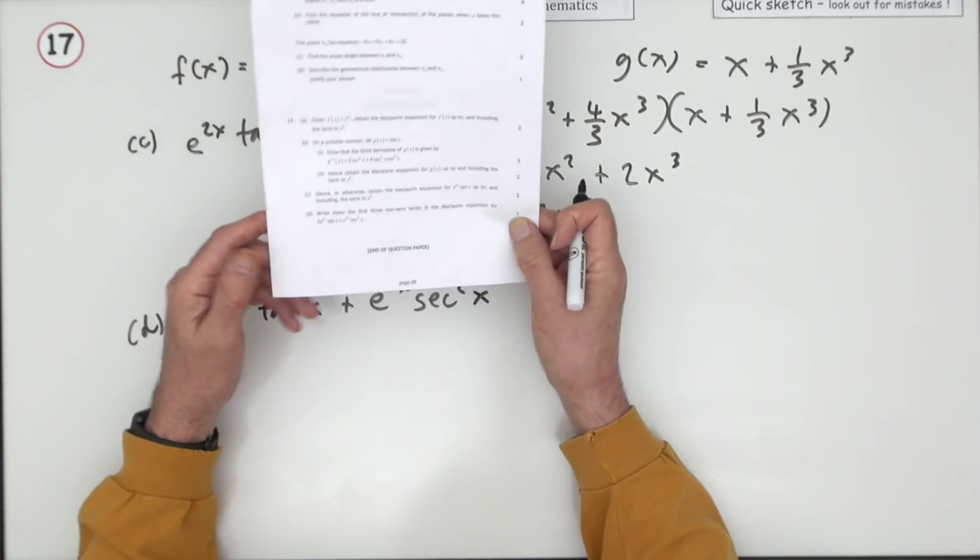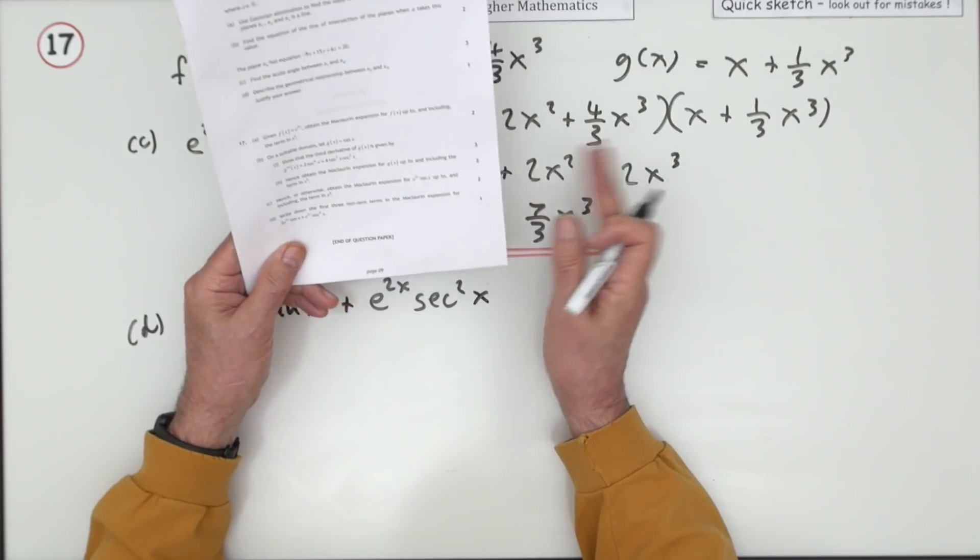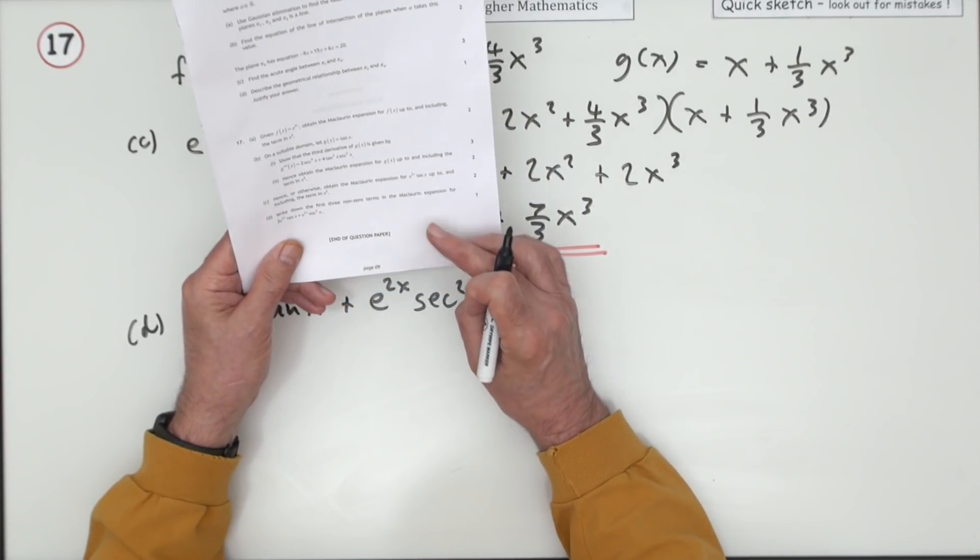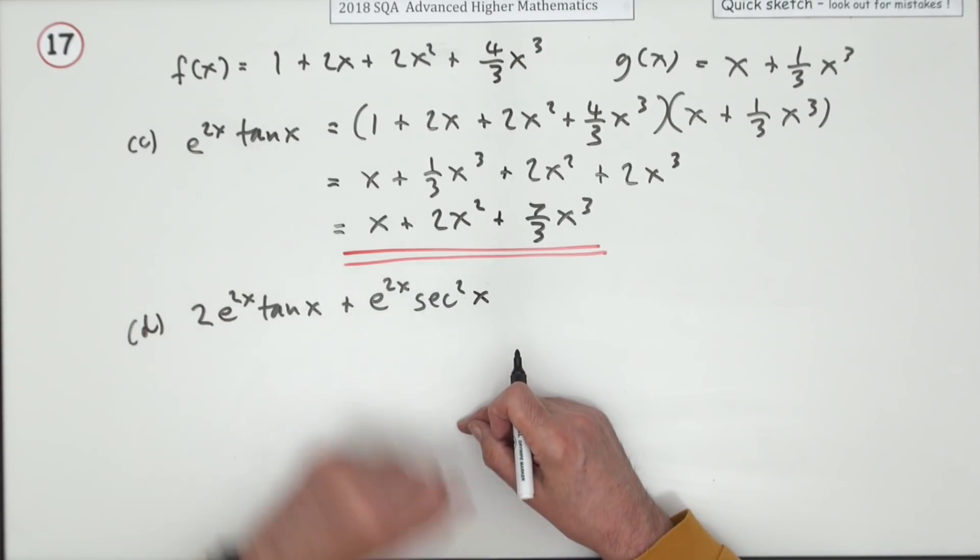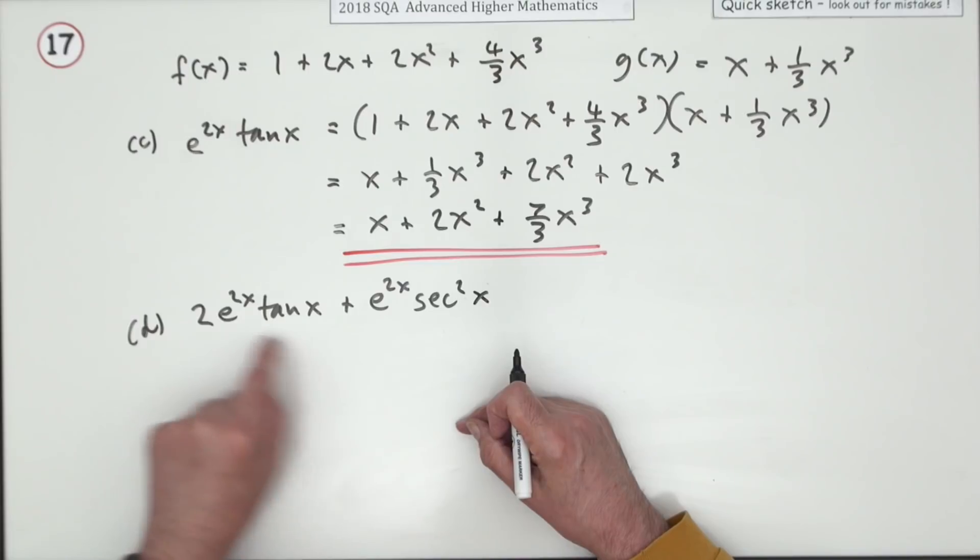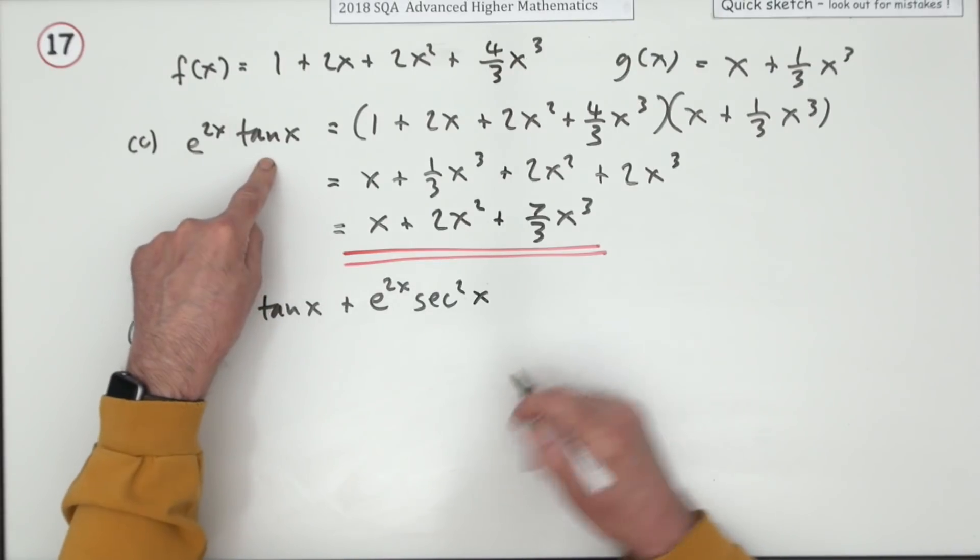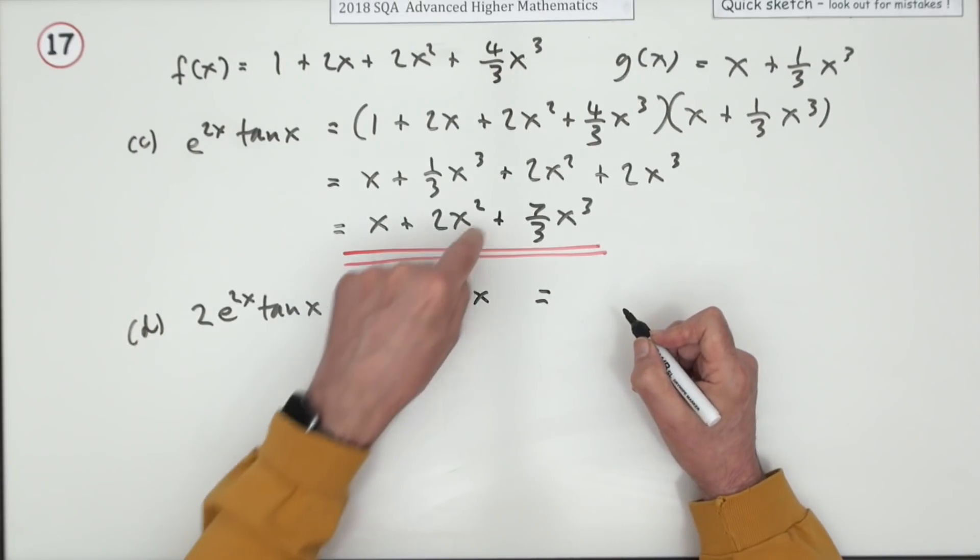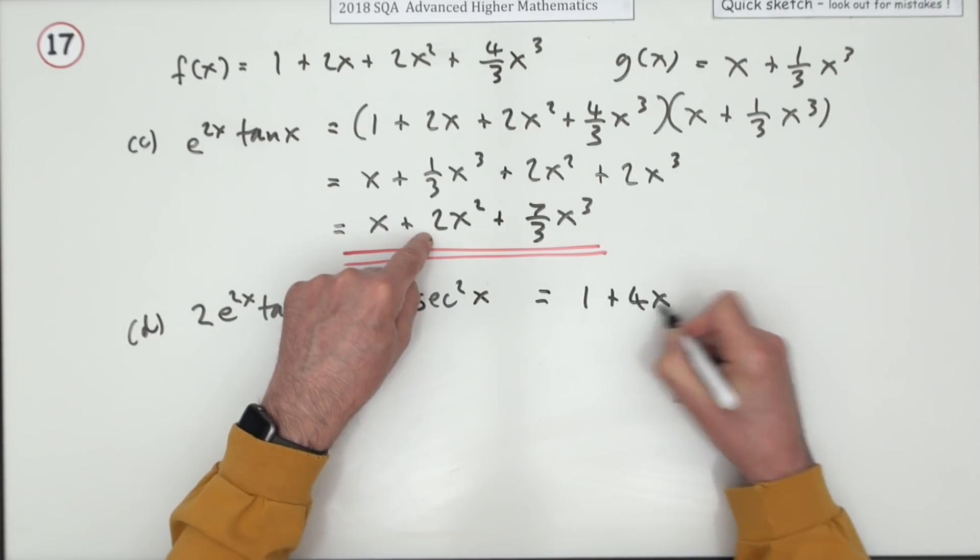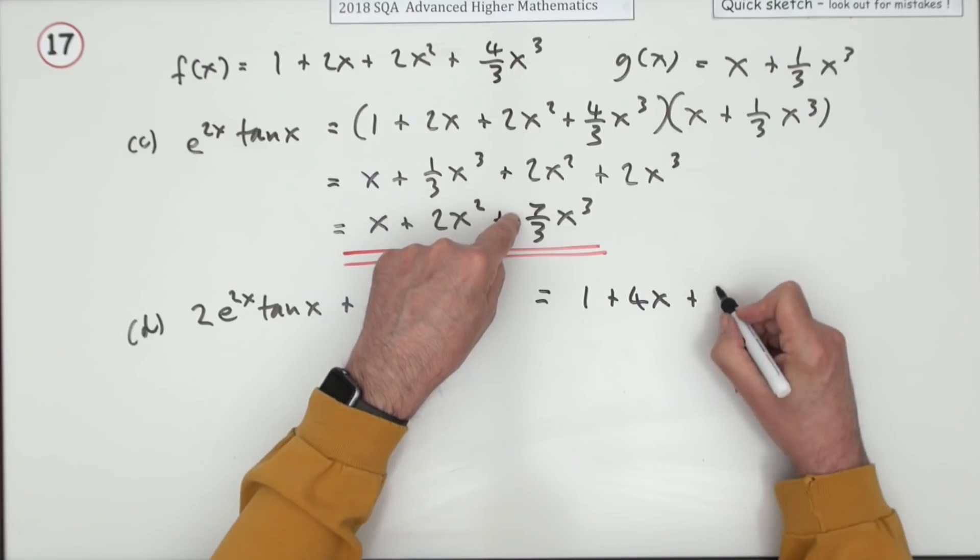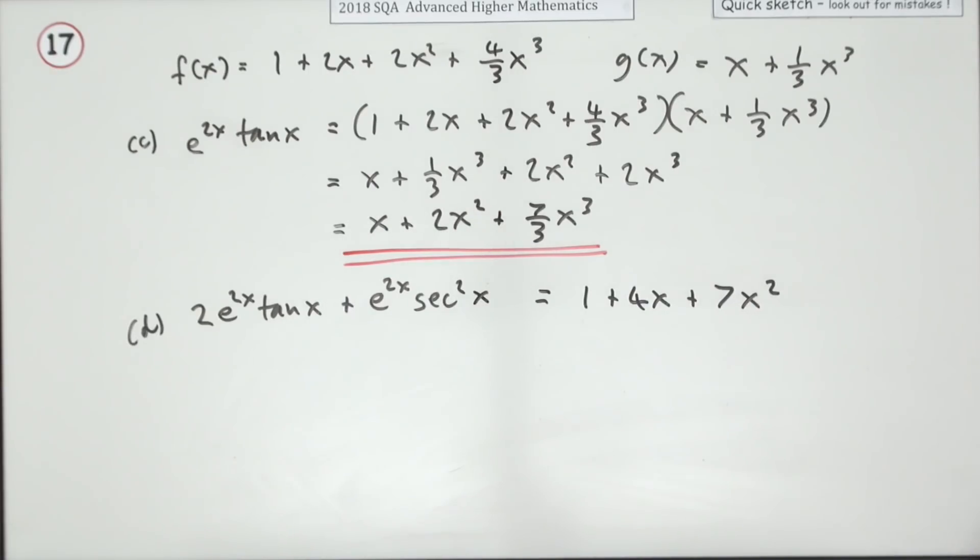And lastly for the final mark. Write down just write down the first three non-zero terms in the Maclaurin expansion of this thing. That was the product rule by differentiating that. So if that's obtained by differentiating this, the result of this will obtain by differentiating that. So it'll just be one plus four x plus the three will knock out the three, seven x squared. Ah well that wasn't too bad question 17. Fairly straightforward.